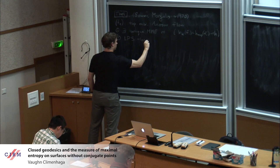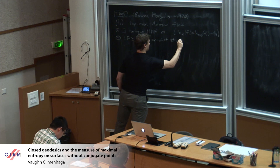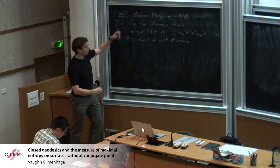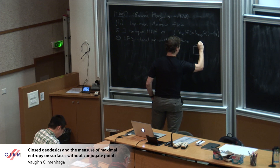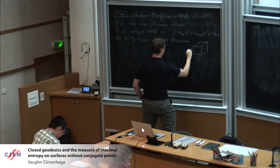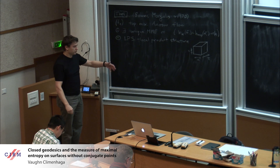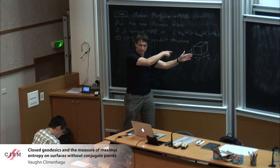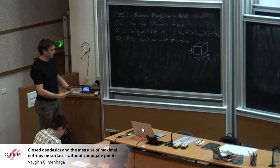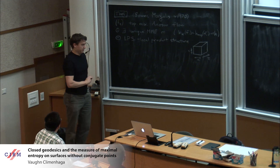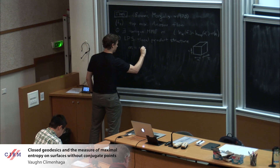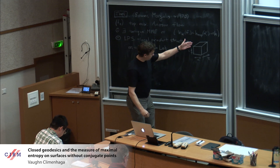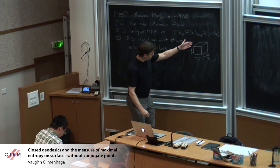One of them is that it has a product structure. I'll use LPS to abbreviate local product structure. The flow itself, being an Anosov flow, has a local product structure. I can consider some box where horizontal is the unstable direction, vertical is the stable direction, and into the board is the time direction. You can take a weak unstable and then foliate by stables, or you can take a weak stable and then foliate by unstables. For the asymptotic estimates we'll eventually get, it doesn't matter which you do. That's a topological statement.